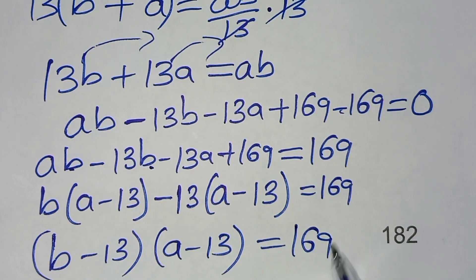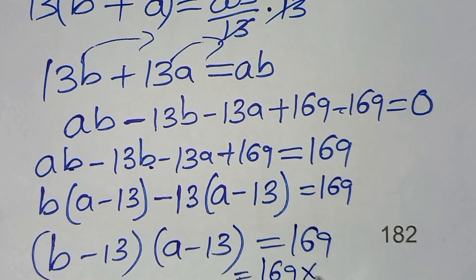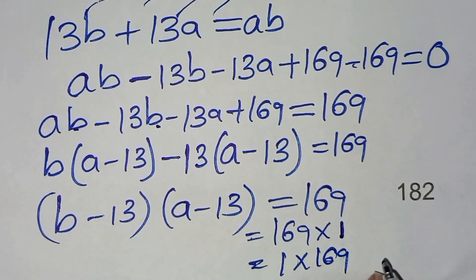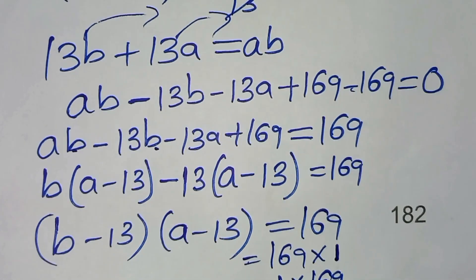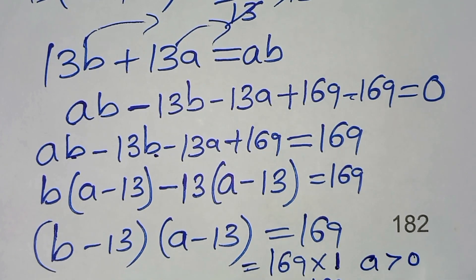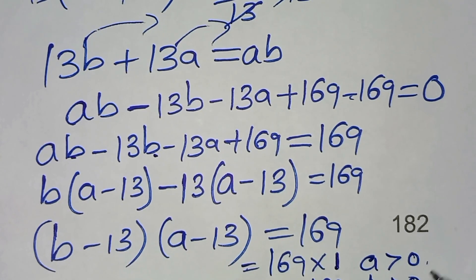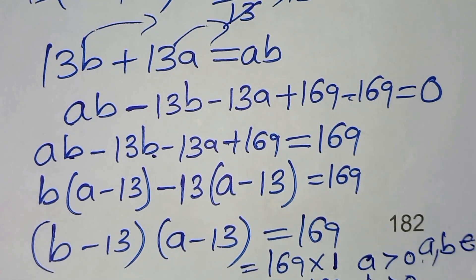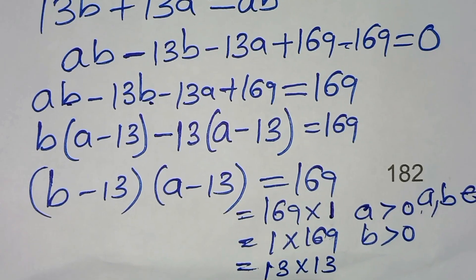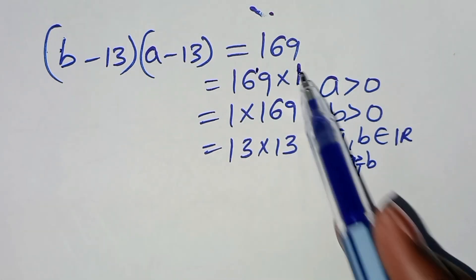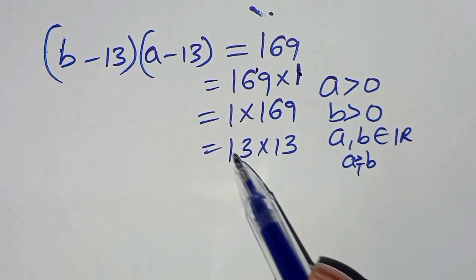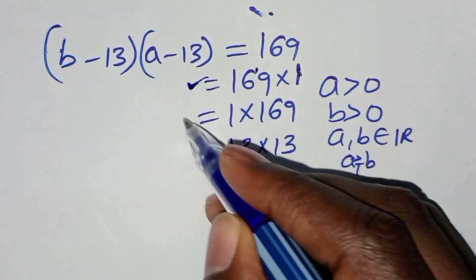Now let's get the factors of 169. We have 169 times 1, we have 1 times 169, and we have 13 times 13. Remember that A is greater than 0 and B is greater than 0, and these are members of the real numbers. So we have three cases.